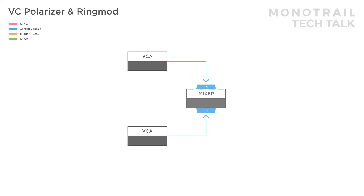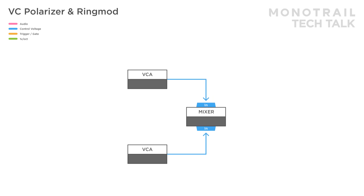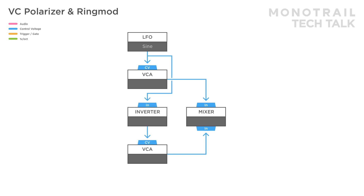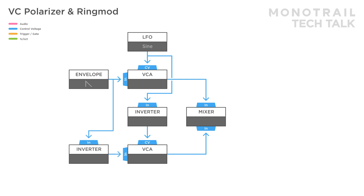Voltage-controlled polarisers are a great way to create dynamic modulation. They can be used to sweep control voltages between a regular and inverted signal. The voltage-controlled polariser is very similar in setup to the crossfader. Two VCAs are used and the outputs of those are mixed. A single modulation source like an LFO is used to modulate one VCA directly and another through an inverter. In order to polarise something, for example an envelope, the input signal is sent directly to one of the VCAs and the copy is sent through an inverter and then into the input of the second VCA.